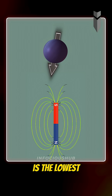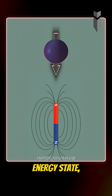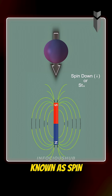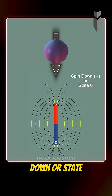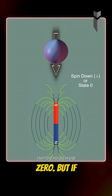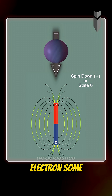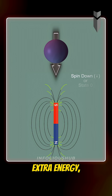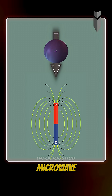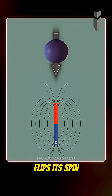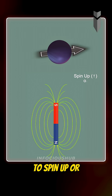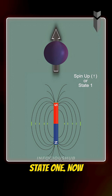This aligned state is the lowest energy state, known as spin down or state zero. But if you give the electron some extra energy, like a microwave pulse, it flips its spin to spin up or state one.